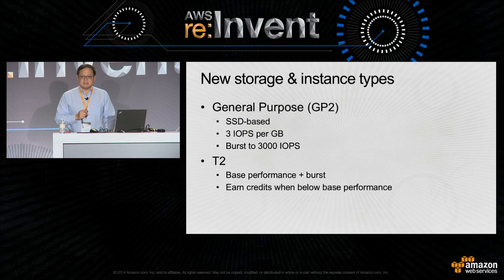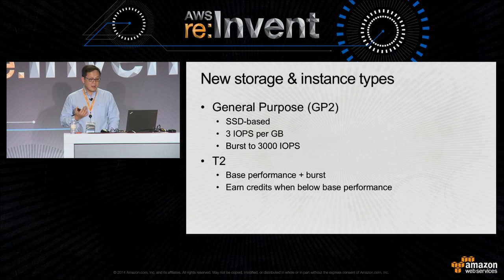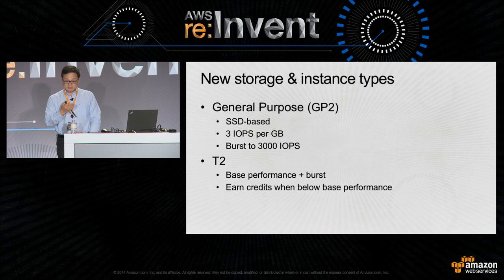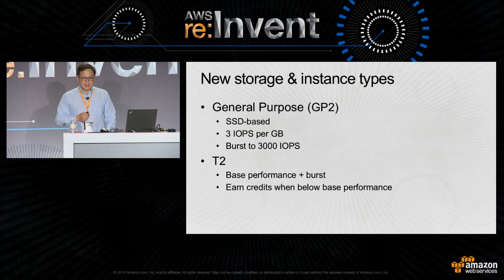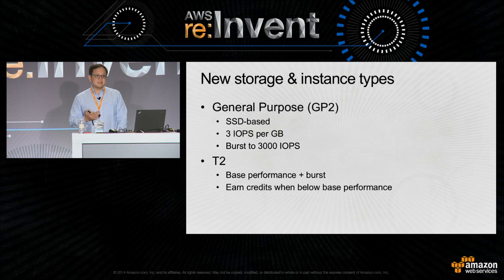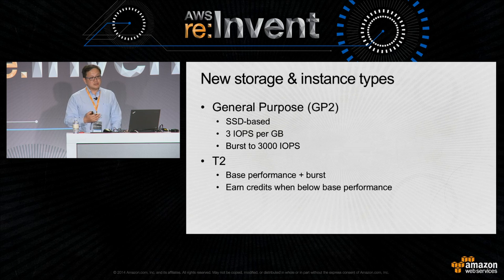These storage and instance types are designed to handle bursty or spiky traffic while providing a decent baseline performance. For GP2, it is SSD-based with a base performance of three IOPs per gigabyte, but it can burst up to 3,000 IOPs per second. Its performance scales linearly and predictably with a simple flat per-gigabyte fee structure and no additional I/O fees.